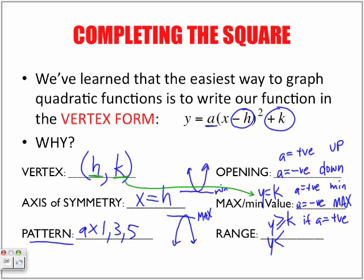We have y is going to be everything less than and equal to whatever our k value is if a is equal to a negative. So that just recaps pretty much what we can extract from the vertex form.